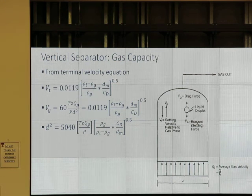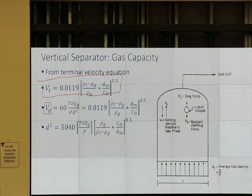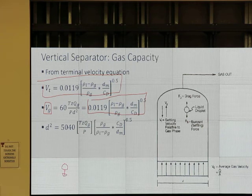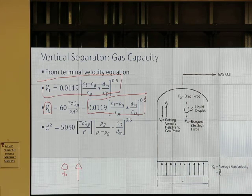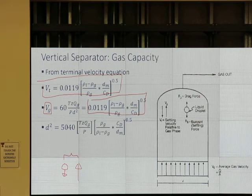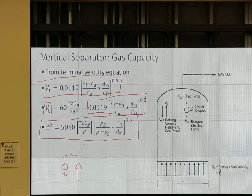Then we know the terminal velocity — that's the equation derived earlier. We make the velocity of gas flowing up equal to the terminal velocity. That is kind of a limit. If I have a droplet, it will fall down maybe one foot per second, and I flow something up equal to one foot per second — that's the boundary. If I flow it faster, it goes up. By making V_g equal to terminal velocity and rearranging, we get D² equal to that. That's the equation for the vertical separator.